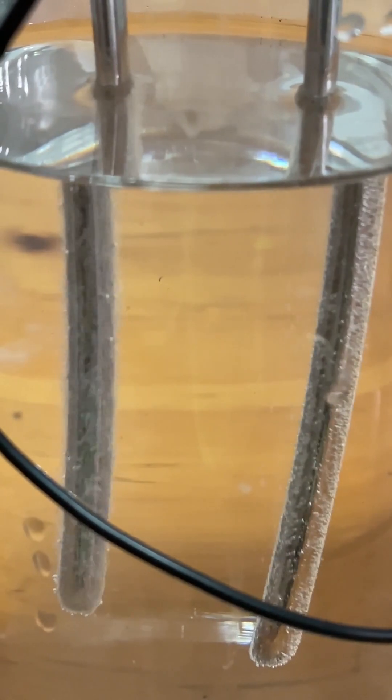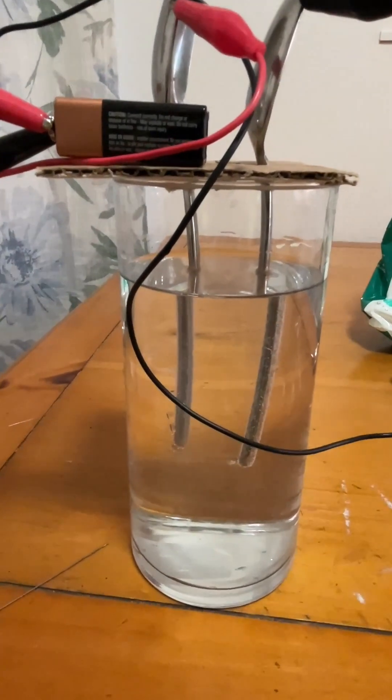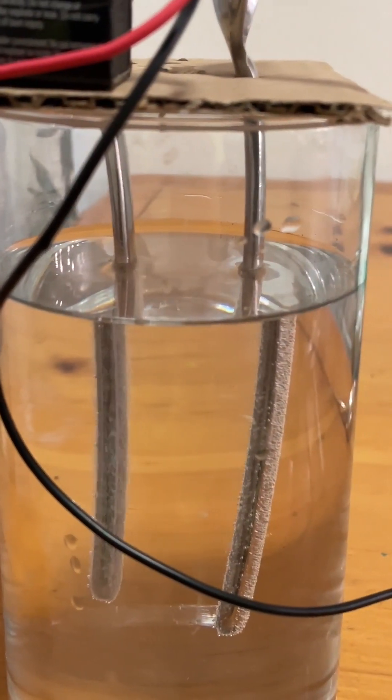Electrolysis of water results in hydrogen and oxygen in a ratio of 2 to 1 by volume. That's why you see more bubbles on the left - there's more hydrogen than oxygen.